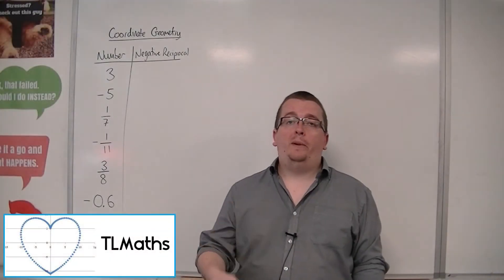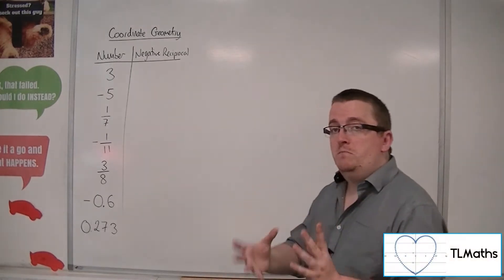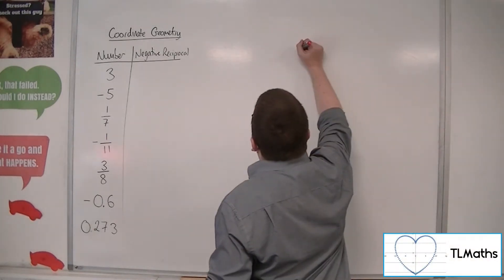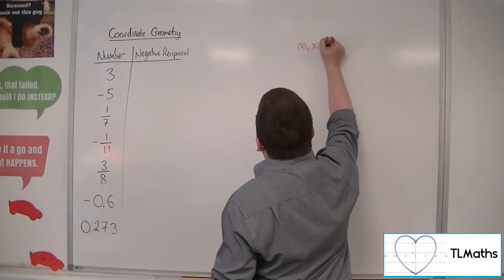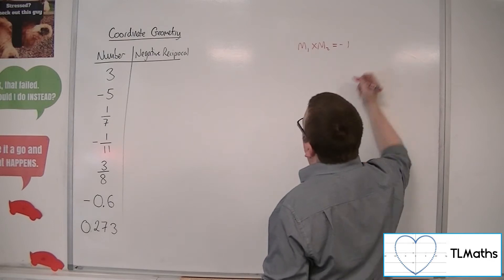In the previous video, I explained that perpendicular lines, their two gradients when you multiply them together, must be equal to minus 1. So the two gradients multiply together, make minus 1, if the two lines are to be perpendicular.